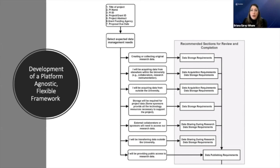Ultimately, we determined that the framework should touch on data needs throughout the research lifecycle. This would include things such as data management, data acquisitions, ethics and legal compliance, storage and backup, and data sharing support needs. We then decided to create a structure that determines sections for researcher review and completion based on their selected data needs. A researcher will first see the data needs components — these include creating or collecting original research data, acquiring research data, data management needs, where the data is being acquired from, storage requirements, information for data transfer, and public access to research data. Once these sections are identified based on the researcher's needs, the researcher will be presented with additional questions that enable us to provide better support.